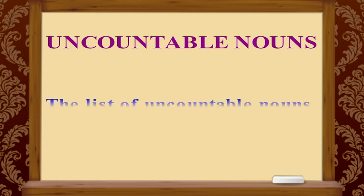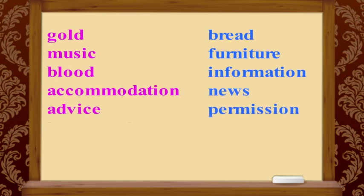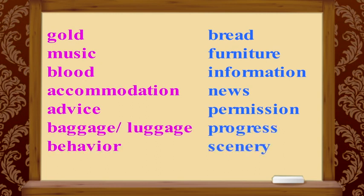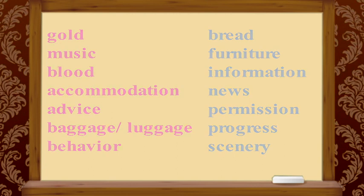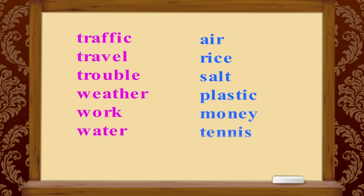Here is a list of uncountable nouns. Please make some notes and learn them by heart: gold, music, blood, accommodation, advice, baggage, luggage, behavior, bread, furniture, information, news, permission, progress, scenery, traffic, travel, trouble, weather, work, water, air, rice, salt, plastic, money, and tennis.